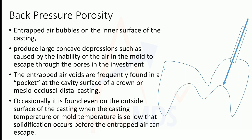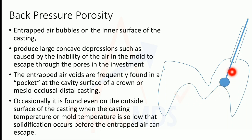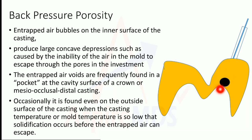Back pressure porosity occurs when gas trapped within the pattern cannot exit through the pores of the investment. As the metal enters, it surrounds the trapped gas, solidifies around it, and leaves a pore. These entrapped air voids are frequently found in a pocket at the cavity surface of a crown or MOD casting, and occasionally on the outside surface.